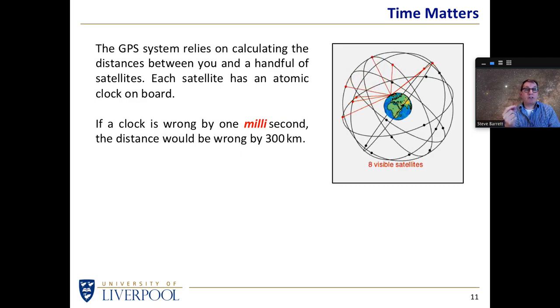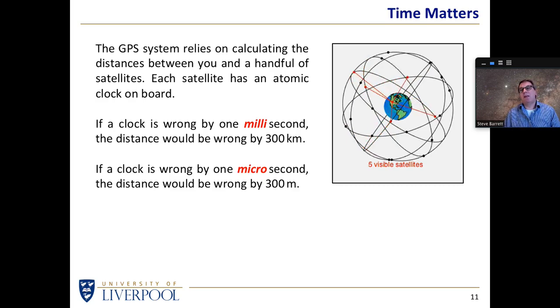So each GPS system has an atomic clock on board, because timing is crucial. And if the timing was wrong, for instance, if one of the atomic clocks on board a satellite was wrong by a millisecond, then the distance you calculate would be wrong by 300 kilometers. You would probably be placed in the wrong continent. If the clock is wrong by one microsecond, then the distance would be wrong by 300 meters.